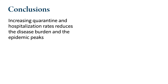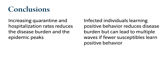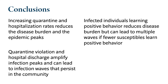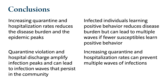What conclusions can we draw from this model? First, increasing quarantine and hospitalization rates is important because it reduces the disease burden and the epidemic peaks. If infected individuals adapt positive behavior quickly, this leads to reduced disease burden, but it may lead to multiple waves of infection if susceptible individuals are slow to learn positive behavior. High quarantine violation and hospital discharge rates amplify infection peaks and can lead to multiple infection waves that persist in the community. Finally, increasing quarantine and hospitalization rates can prevent multiple persisting waves of infections.